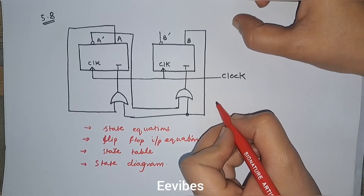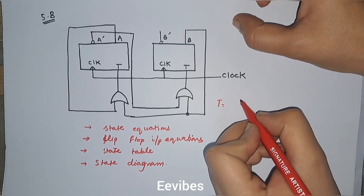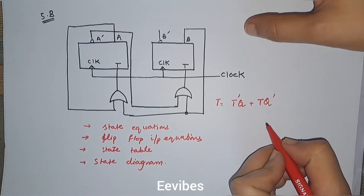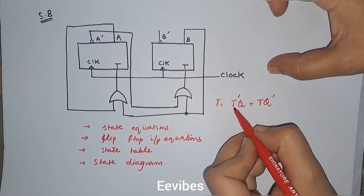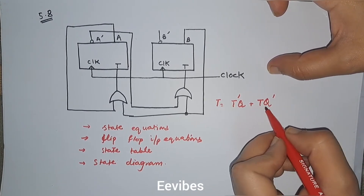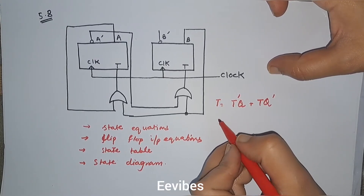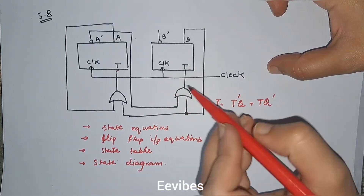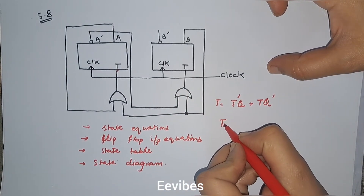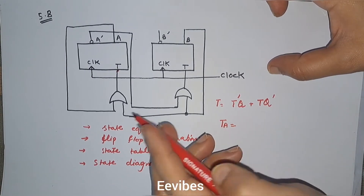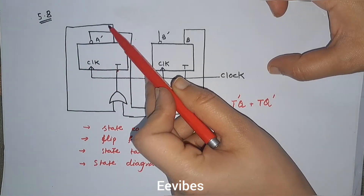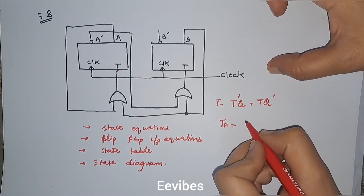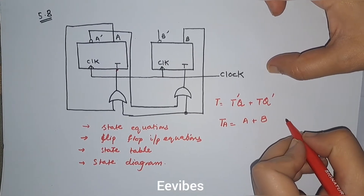We know that for the T-type flip-flop, the general output is Q(t+1) = T'Q + TQ', where T is the input to the T flip-flop (the toggle flip-flop) and Q and Q' are its complemented outputs. If you look at the given circuitry, the T input of the first flip-flop, T_A, can be represented as the OR of A and B, so you can write it as A + B.